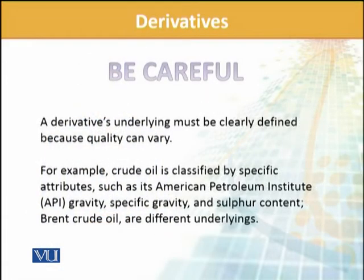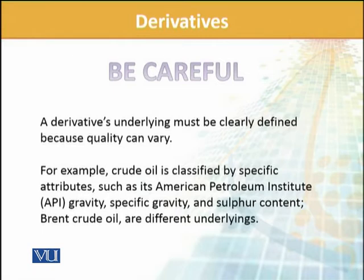Here we need to be careful: the underlying must be clearly defined, because there are multiple types of underlying whose quality can vary significantly. For example, even with crude oil there are multiple types — such as the American Petroleum Institute gravity, what the specific gravity will be, and what the sulfur content will be. Similarly for rice — what quality of rice? For currencies — which specific currency? So we need to capture the underlying's key terms and qualities precisely.